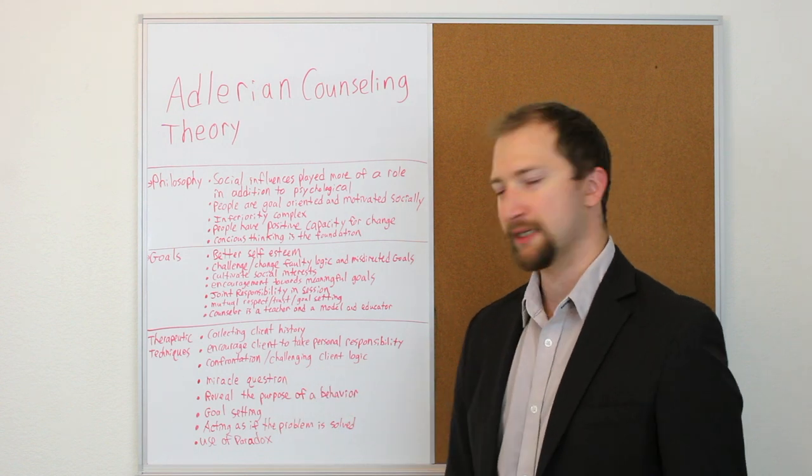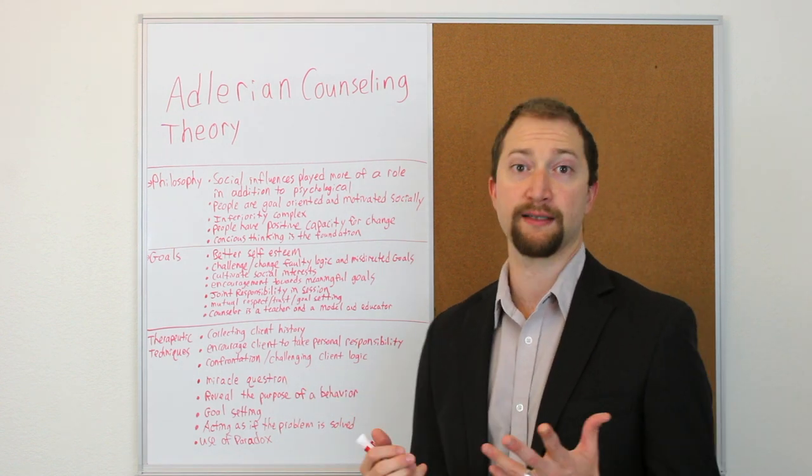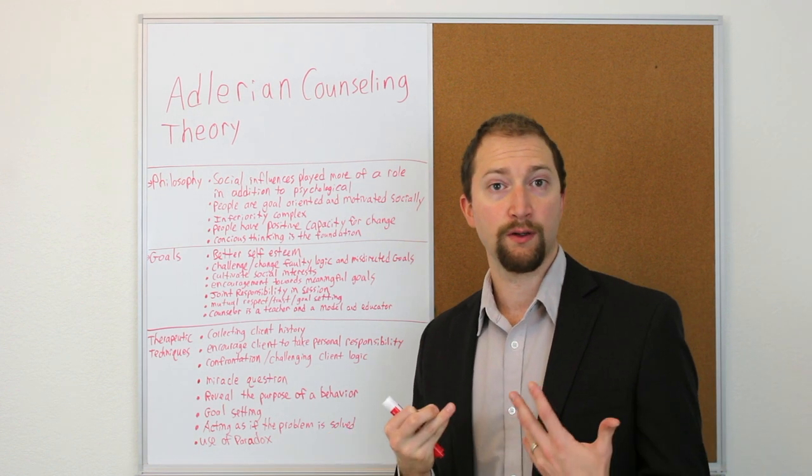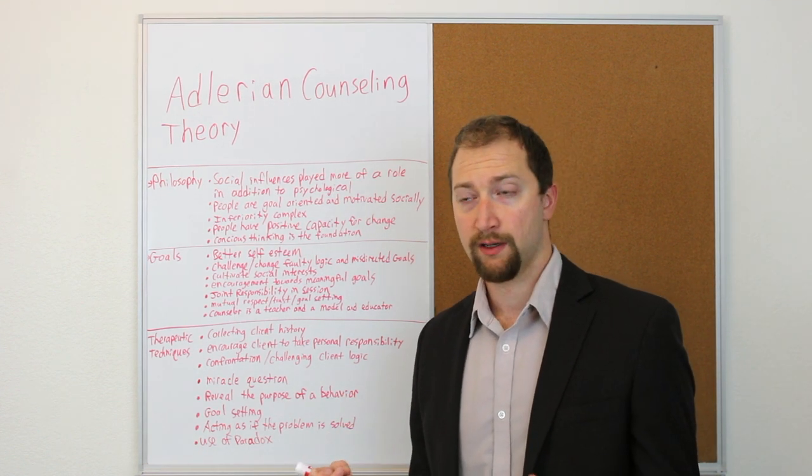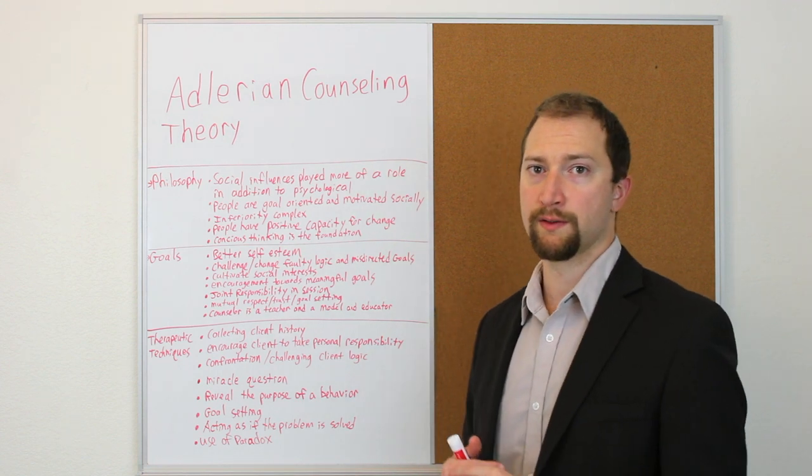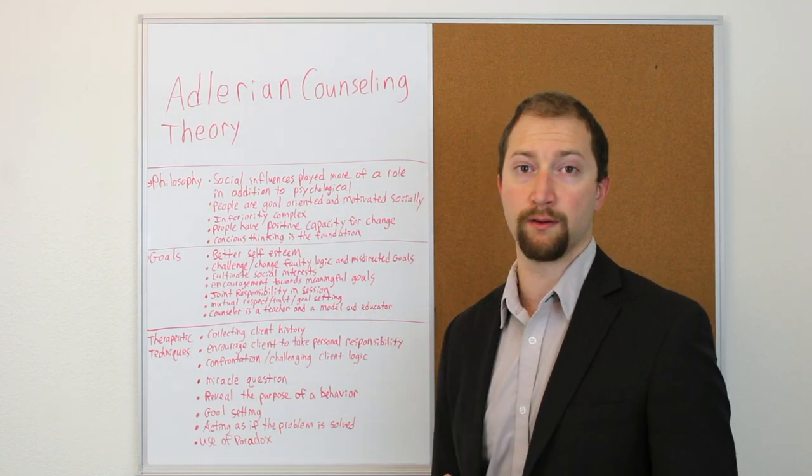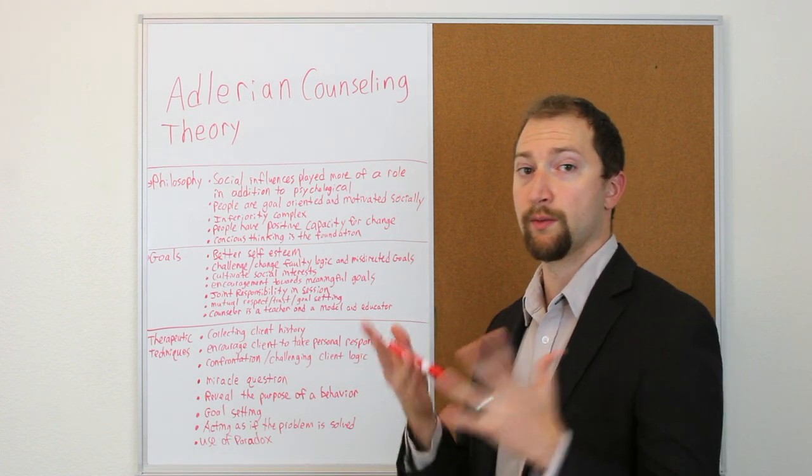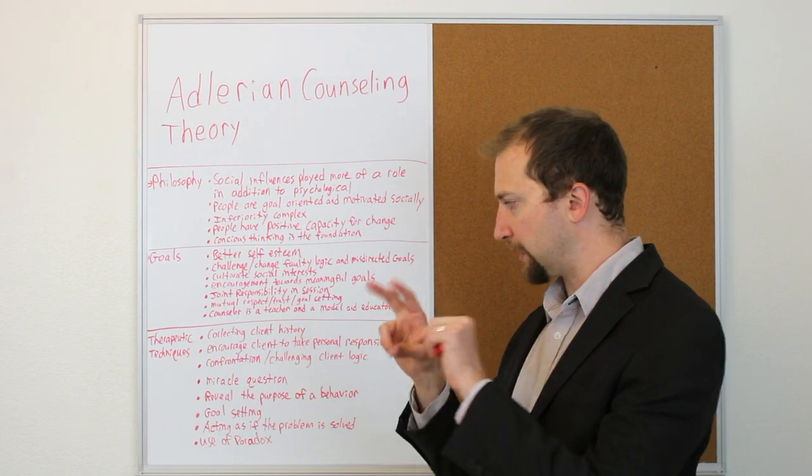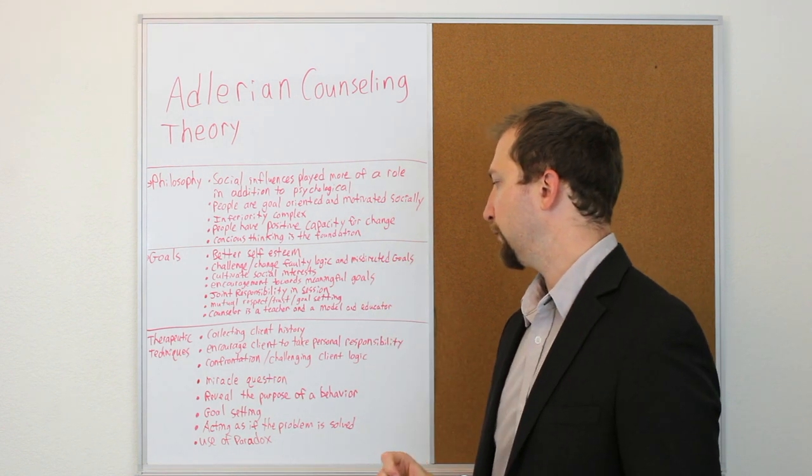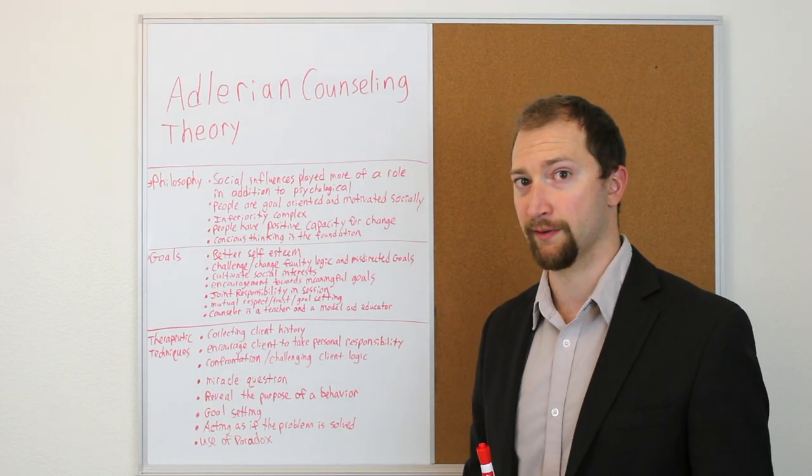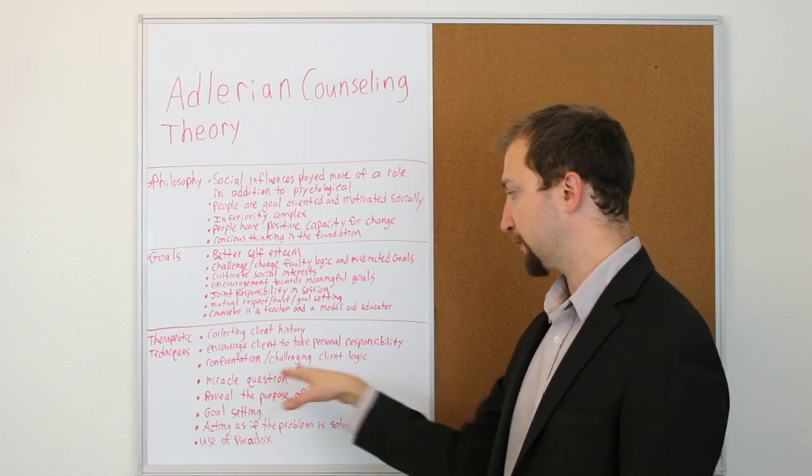Then we've got the miracle question. This is definitely something I've used from this counseling theory a lot. It's very helpful. You basically ask the client if all of your problems were solved, what would your life look like? And it's like a very good question. Like what's a perfect life look like to you? Or once you accomplish all your goals, how do we know that your goals are accomplished? Or if you didn't have any problems, well, what would that look like? So there's a lot of ways to ask that, but it's like they call it the question, the main question, which helps the client share insight and identify some goals all at the same time. Very, very effective. It's very organic as well. So that's something I use a lot.